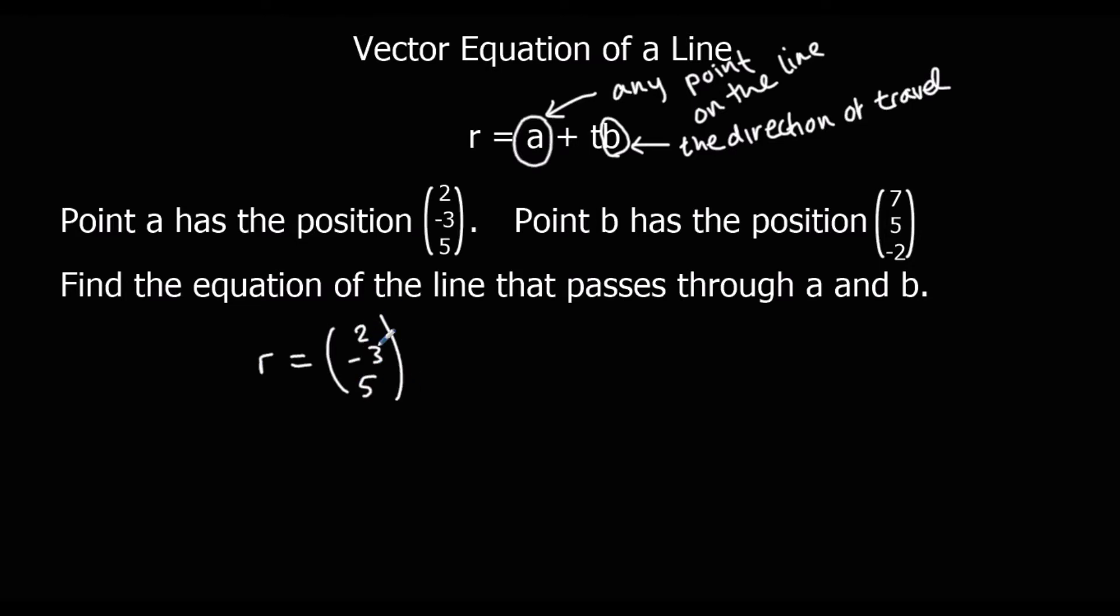So r is going to be (2, -3, 5) plus t times the direction of travel. So what direction are we going in? In order to find that out, we can either do b take away a or do a take away b. So if I want to work out a to b, I do b take away a.